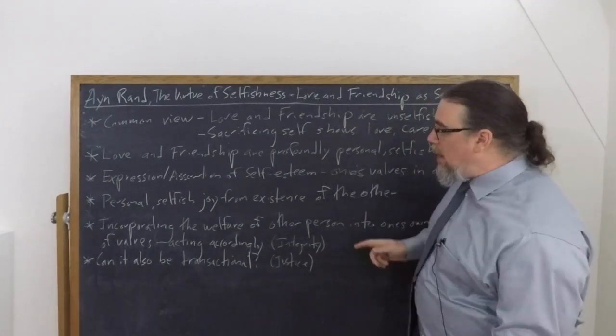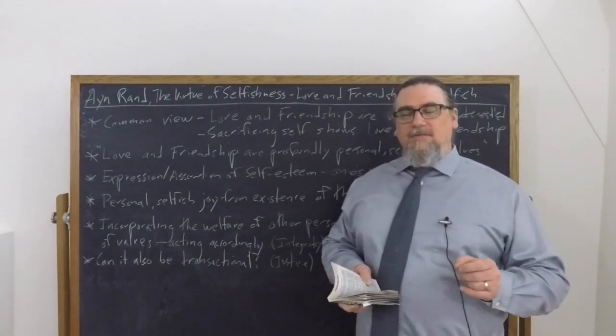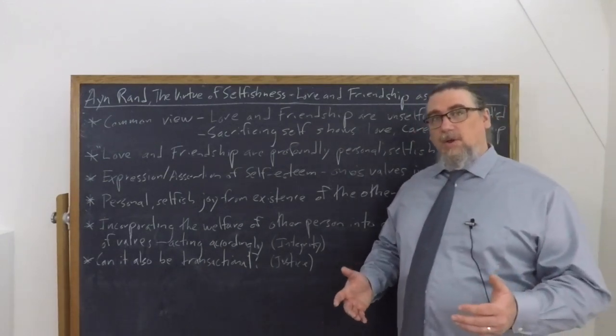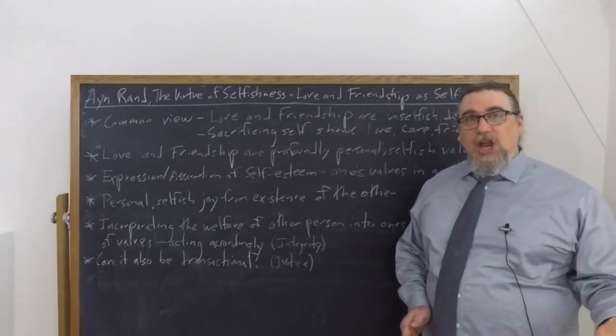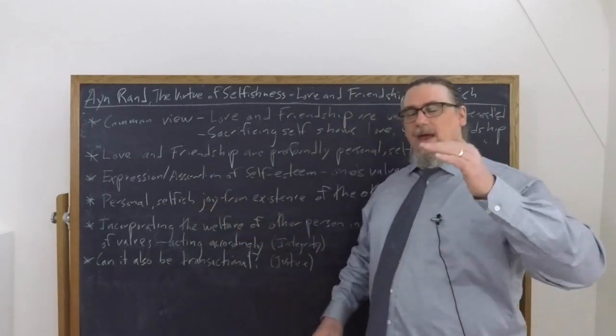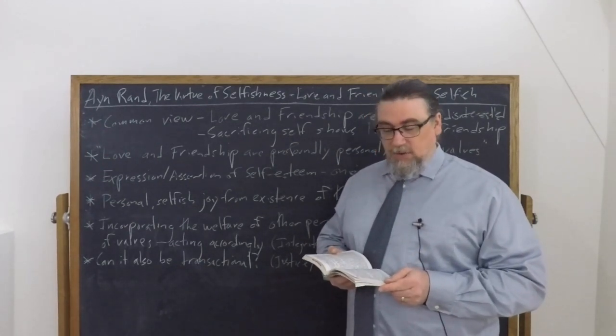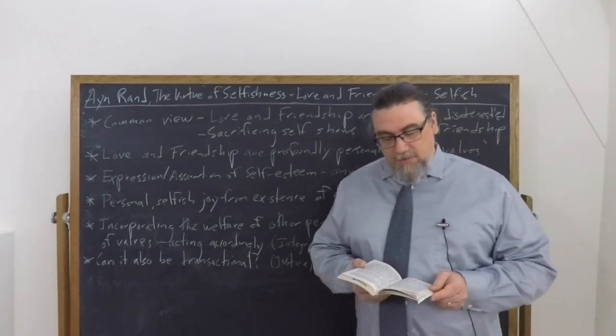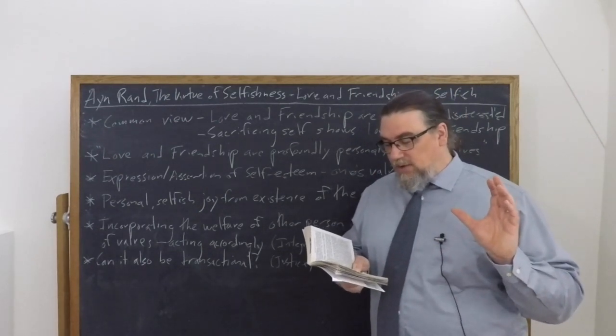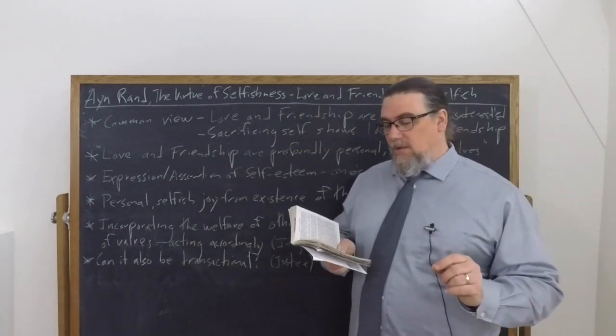She also talks about incorporating the welfare of the other person into one's own hierarchy of values. And she uses that phrase hierarchy of values several times in this essay. That is not something unique to Rand. There were quite a few philosophers in the early 20th century who talked in terms of a hierarchy of values. Max Scheler would be a prime example of this. A lot of people will always want to bring up Maslow's hierarchy of needs, not quite the same thing as the hierarchy of values. This is the values that we accord to things and what we're willing to sacrifice for others. So she says sacrifice is the surrender of a greater value for the sake of a lesser one or of a non-value, which is actually different than what Scheler says about this. So she says that the rational principle of conduct is always act in accordance with the hierarchy of your values, never sacrifice a greater value to a lesser one.